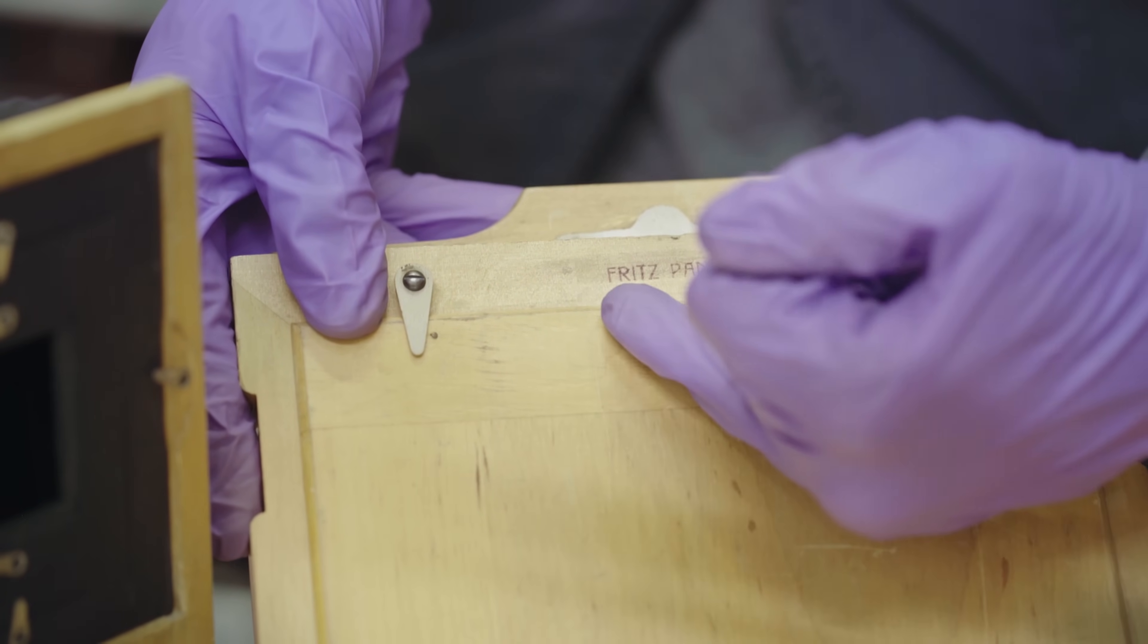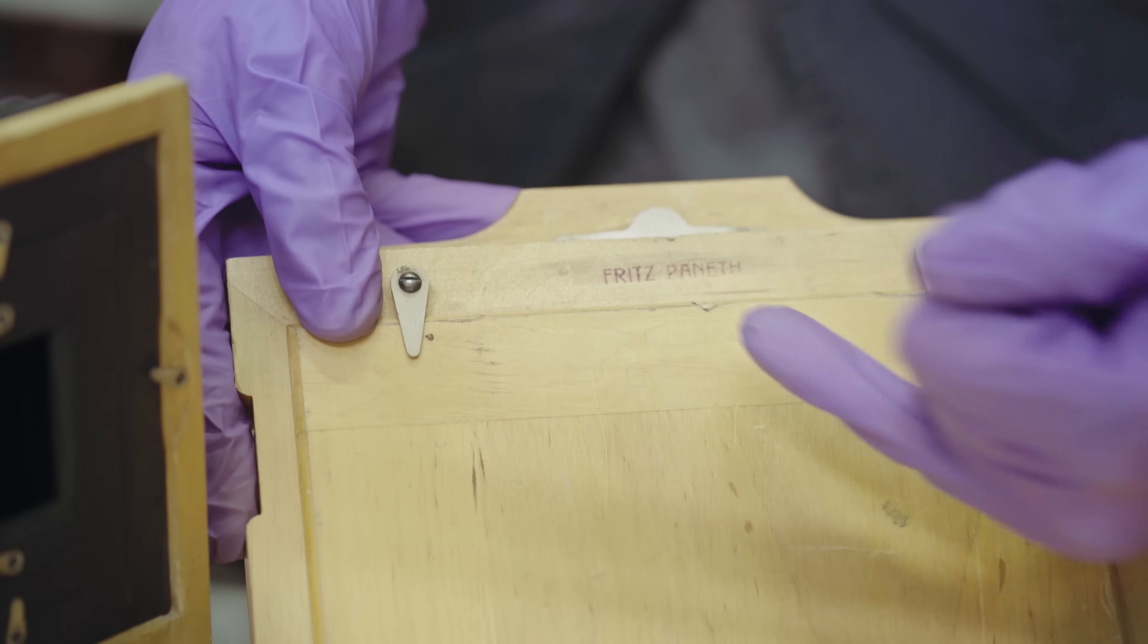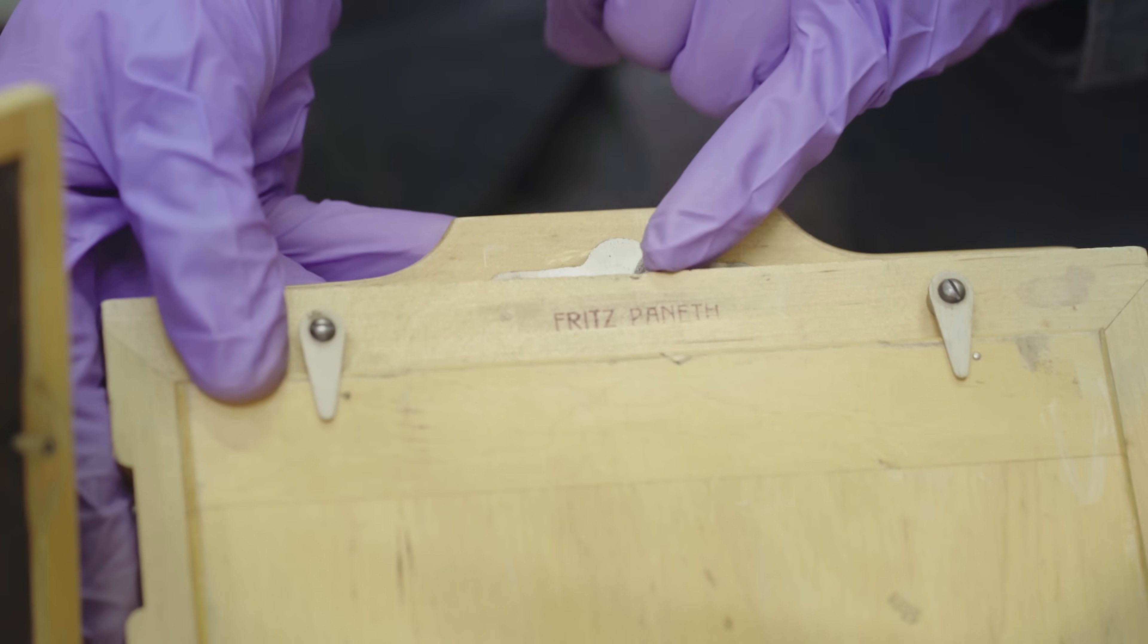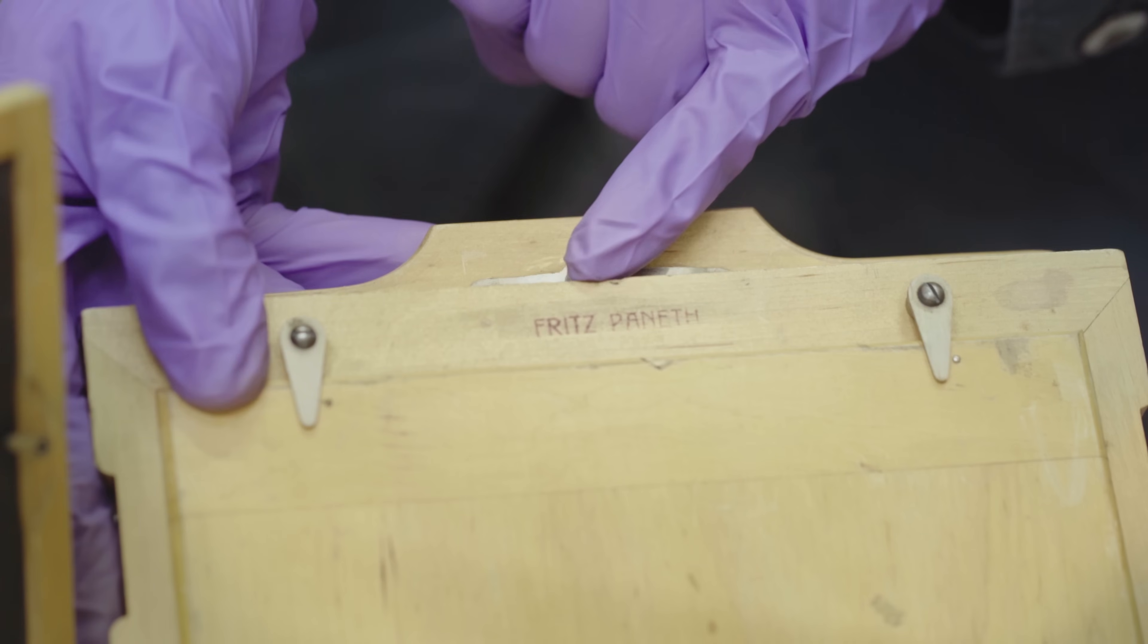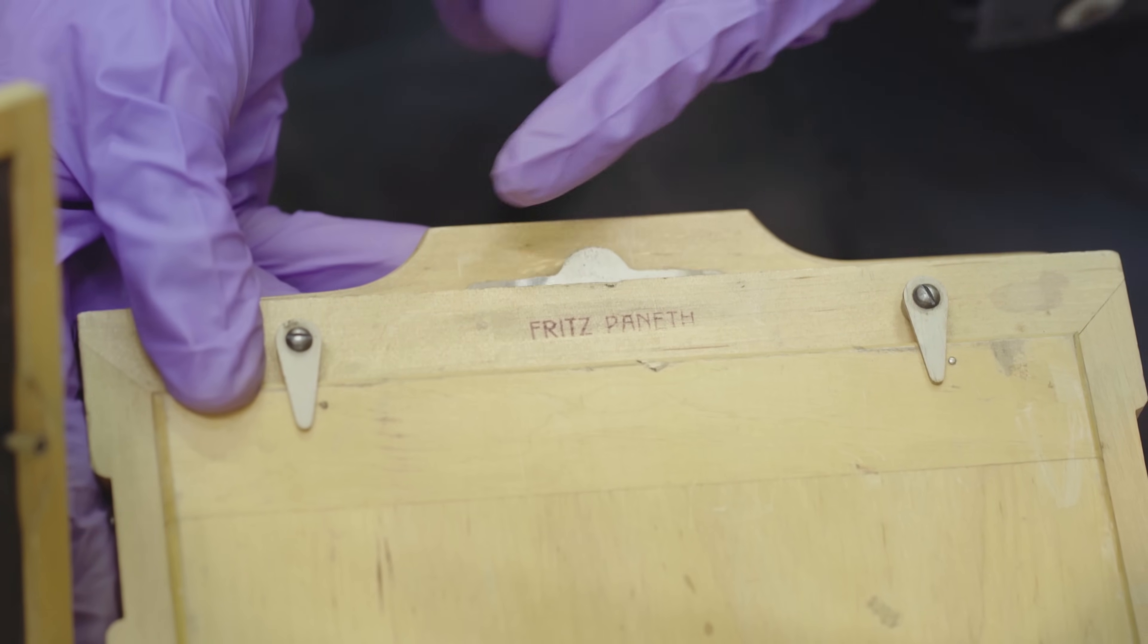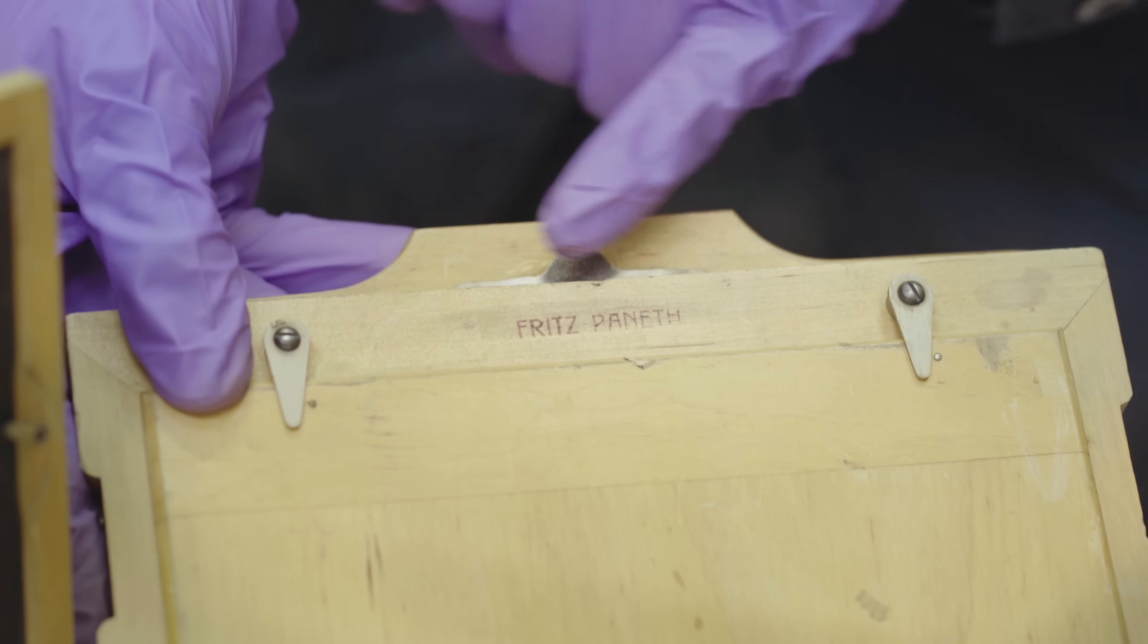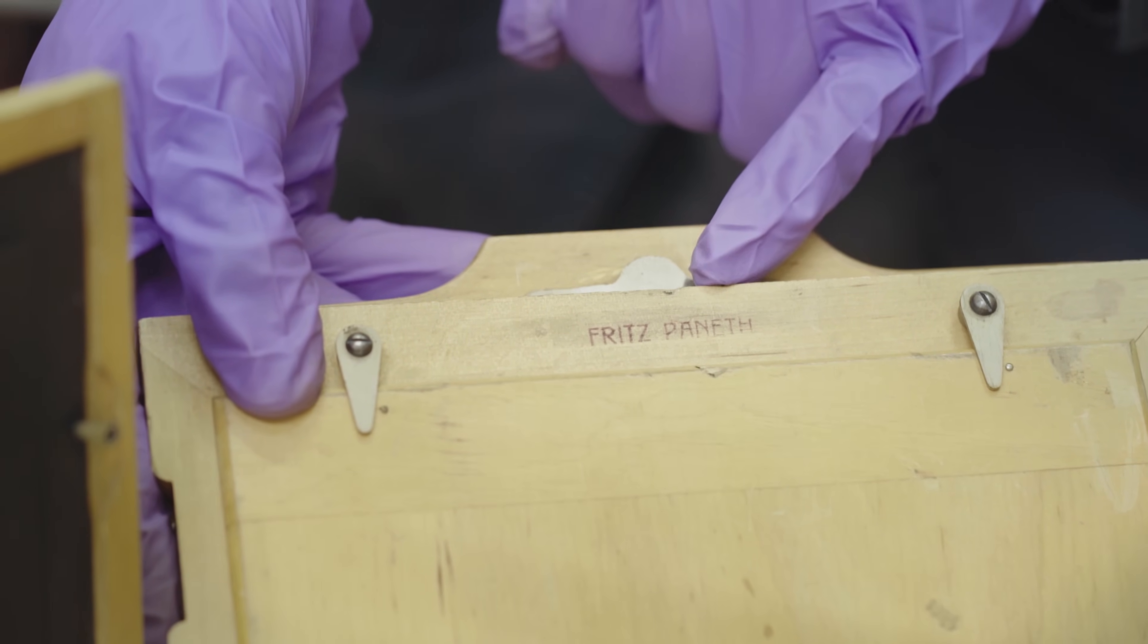As you can see, we've got the name of the owner of the object here. It actually doesn't look handwritten, it looks printed on there. Whether the manufacturer would have been able to do that for Paneth or whether he was the type of man that had the ability to mark his objects himself, we're not sure at this point.